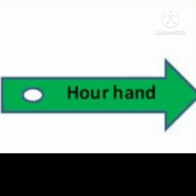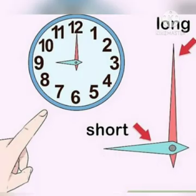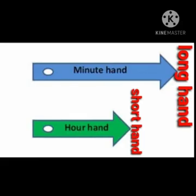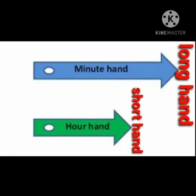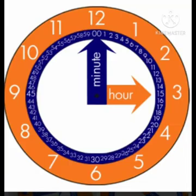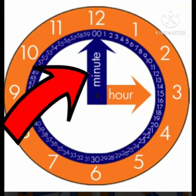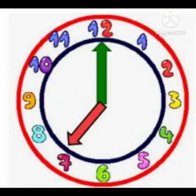So, remember, the clock has two hands. The other hand on the clock is the long hand, and it also has a nickname called the minute hand. Now, can you repeat after me? By pointing out to the long hand: it is the minute hand. Alright.